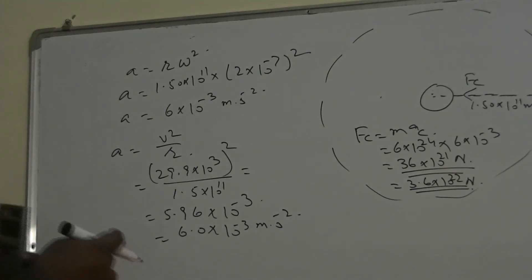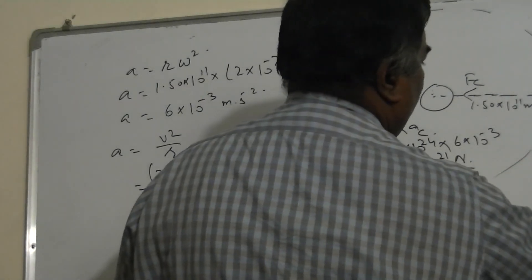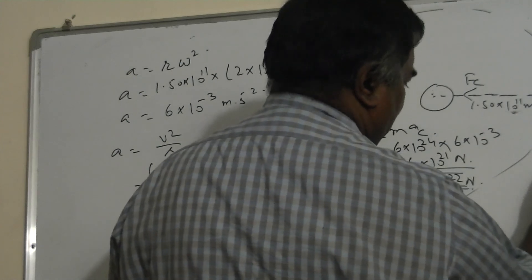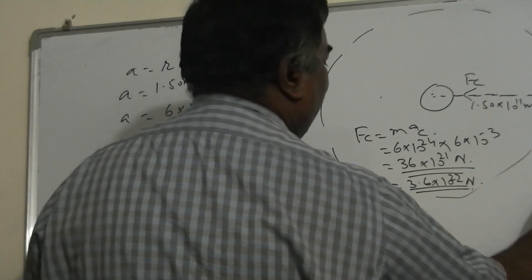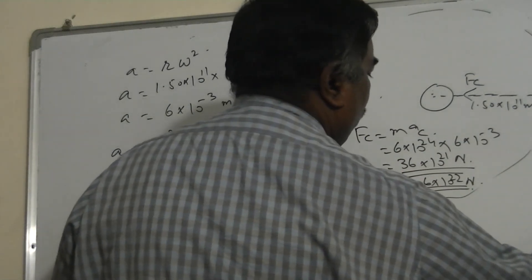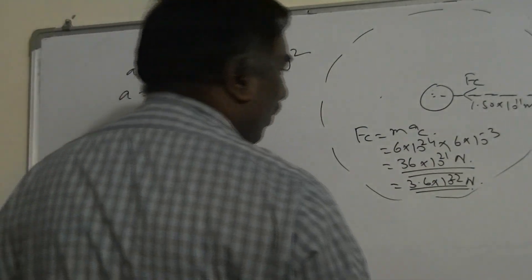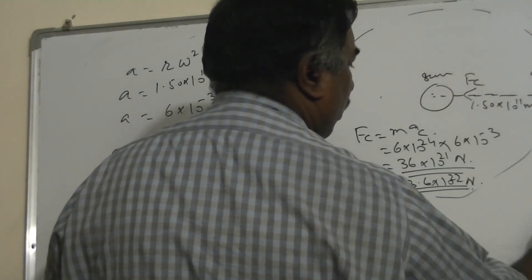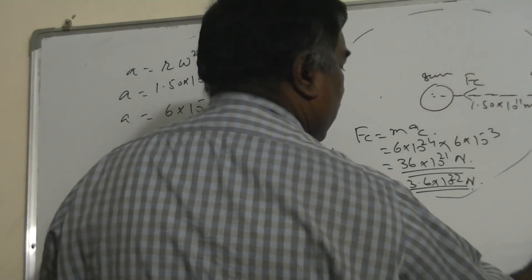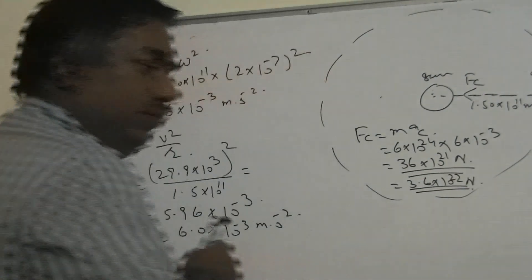To summarize, I used the following formulas throughout: first, omega equals 2π upon T to find angular speed; then V equals R times omega for linear speed; then a equals V squared upon R or R times omega squared for centripetal acceleration; and finally Fc equals M times ac for the gravitational pull of the Sun on the Earth, found to be 3.6 into 10 to the power 22 newtons.